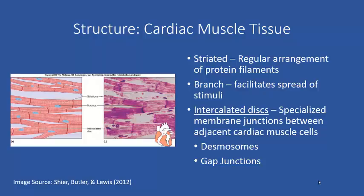The other structure in intercalated discs important to cardiac muscle function is gap junctions. Gap junctions are formed by proteins that span the gap between two cells and function as a tunnel that allows ions to pass from one cell to the next. The flow of ions is an electrical signal — the stimulus for the muscle to contract — allowing the stimulus to spread quickly throughout the heart wall so the heart contracts in a coordinated fashion.